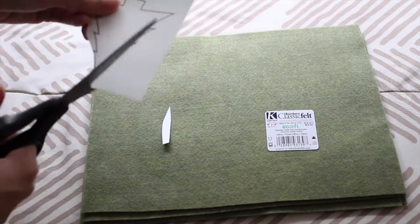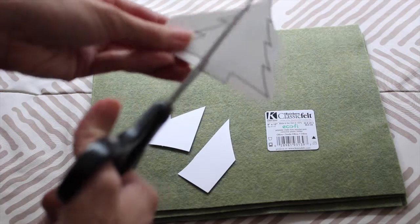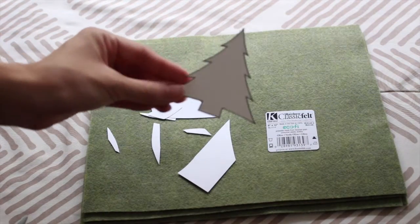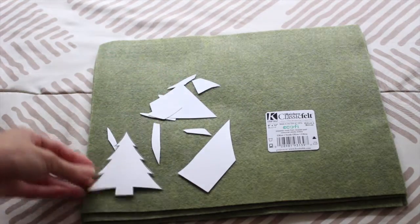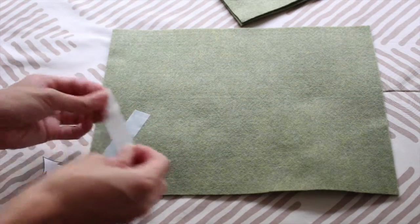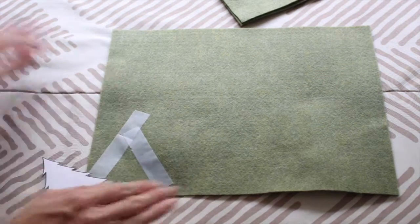First, I cut out the tree template that I made. Next, I place pieces of tape onto the felt. The tape makes it easier to draw on and it also makes cutting the design more precise.